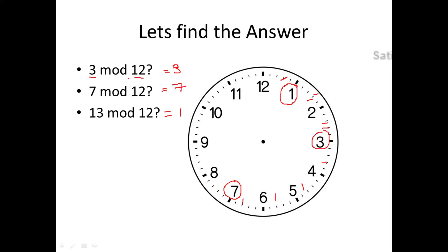One way to compute this: if n is less than k, then n mod k equals n. Since 3 is less than 12, the answer is 3. Likewise, for 13 mod 12, here n is greater than k, so we'll have a remainder — we divide n by k and whatever remainder we get is the answer. These things we have already seen in previous classes.